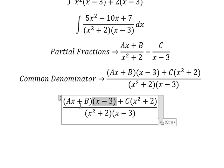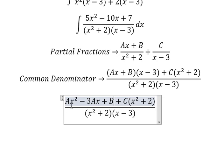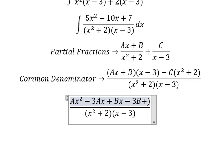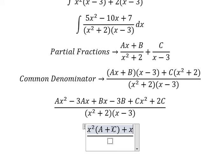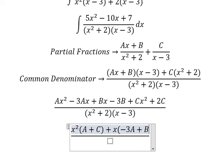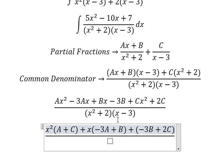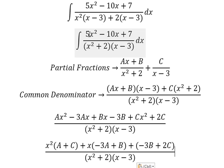Now we need to expand this expression. We arrange the terms based on powers of x. For x squared we have A plus C; for x we have negative 3A plus B; and the constant term is negative 3B plus 2C.